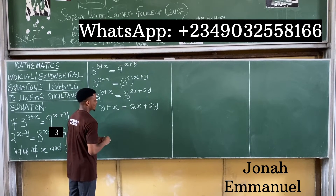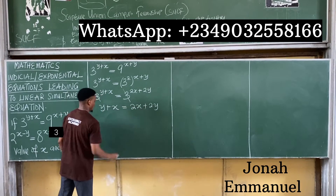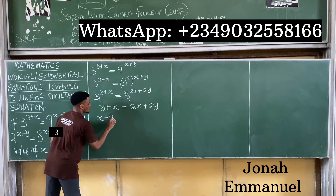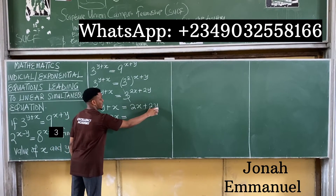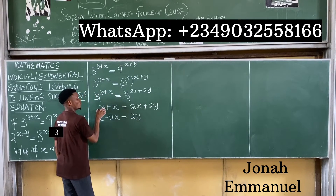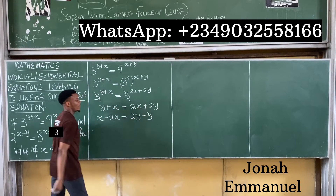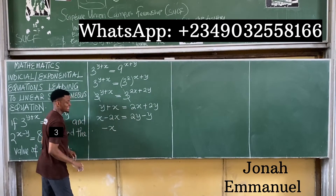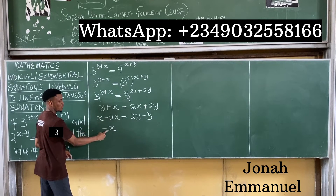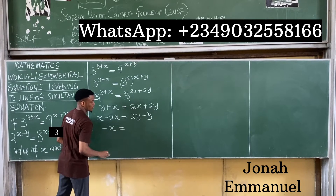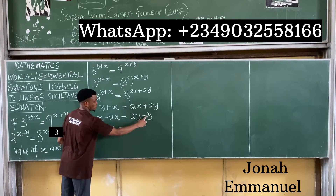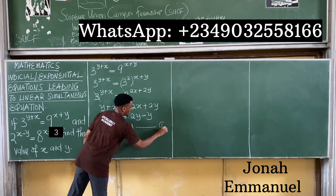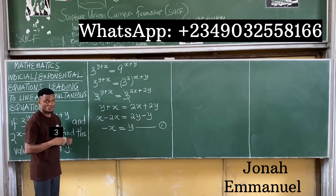They are now in the same base, so they can cancel out. Equating the indices: y plus x is equal to 2x plus 2y. Collecting like terms — bring x terms to one side and y terms to the other — x minus 2x equals minus x, and 2y minus y equals y. So my first equation is: minus x is equal to y.